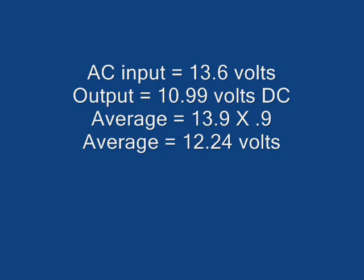The book says the average should have been, what we should have been reading, was 13.9 times 0.9 or 12.24 volts. So, we seem to have too much voltage. Let's find out the reason why.